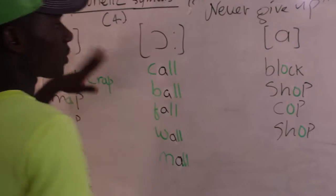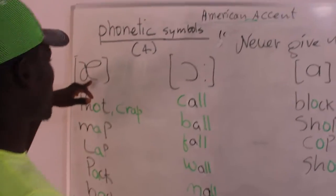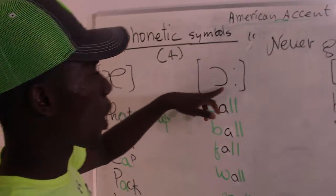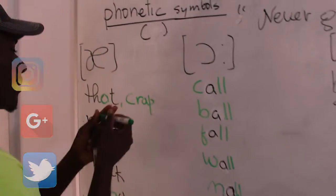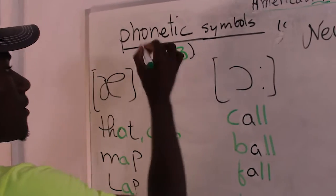Today guys, I'm going to teach you three symbols. We have [æ], [ɔ], and [a]. We have three.